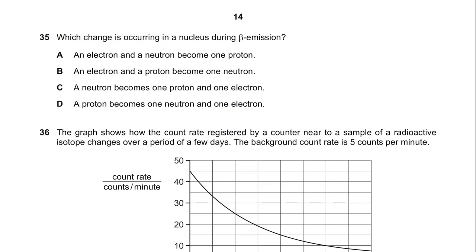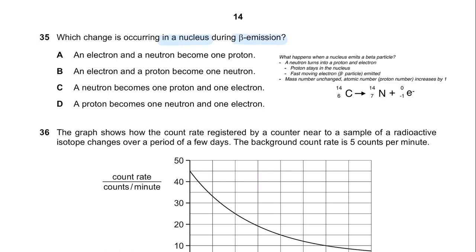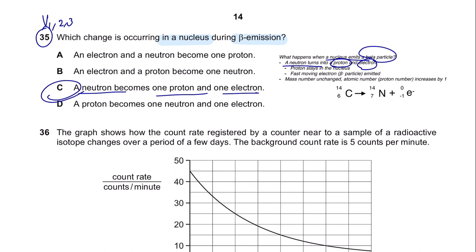Question 35. Which change is occurring in a nucleus during beta emission? This question has been repeated across variants 1, 2, and 3. During beta emission, a neutron turns into a proton and an electron. So the answer is C. Make sure you know what happens in the nucleus during alpha, beta, and gamma emission.